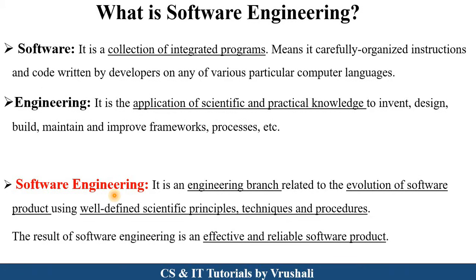So by combining software and engineering, software engineering is formed. Software engineering is an engineering branch where we develop and evaluate software products by using scientific principles, techniques, and procedures. The result of software engineering is to develop effective and reliable software products. In our daily life, we use different applications like social, banking, and gaming applications — all these softwares are developed by developers using specific principles, techniques, and procedures.